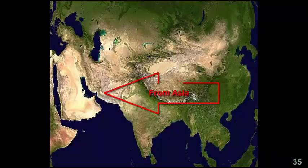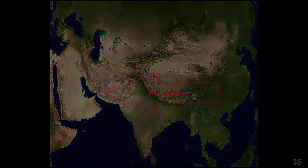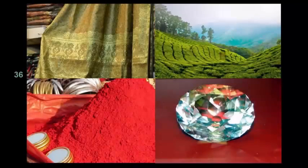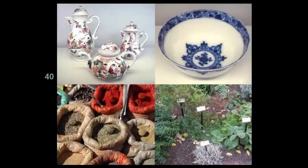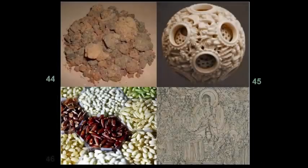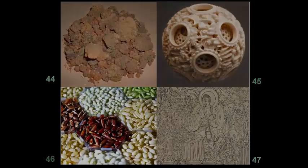Examples of goods that flowed from east to west include silk, tea, dyes, precious stones, china such as plates, bowls, cups, and vases, porcelain, spices such as cinnamon and ginger, medicine, perfumes, ivory, rice, paper, and gunpowder.